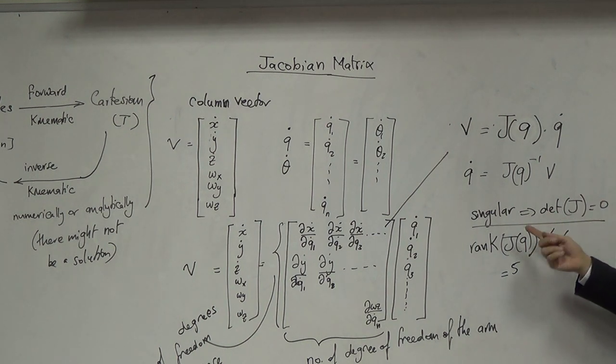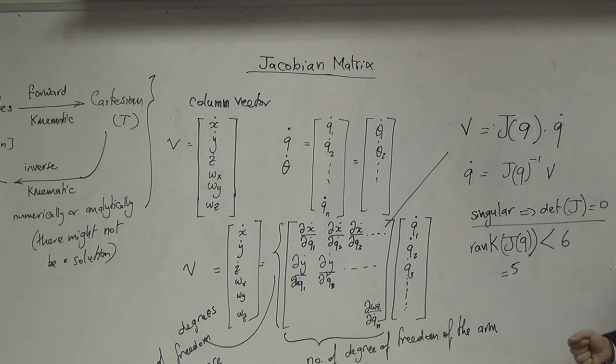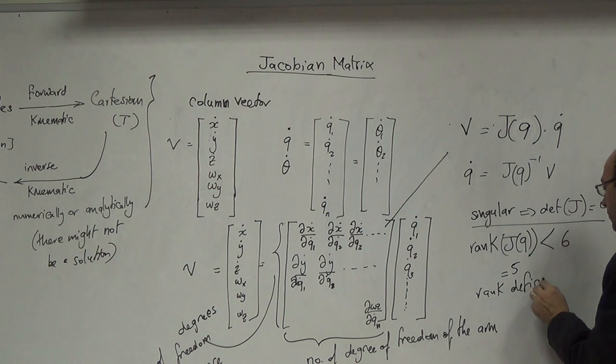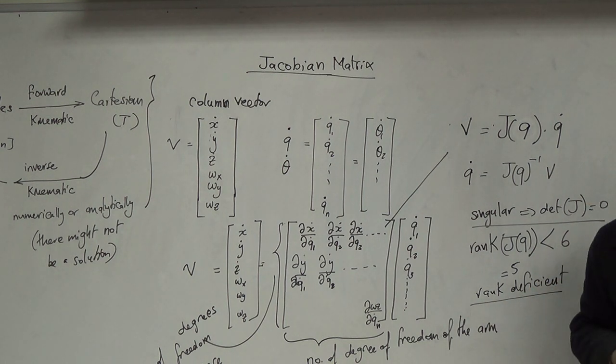والسبب إنه في عندي singularity عند هاي النقطة. رح تصير السرعات المطلوبة عالي جداً لأنه رح تصير الـ Jacobian تبعها أقل من 6. رح تصير rank نسميها rank deficient.